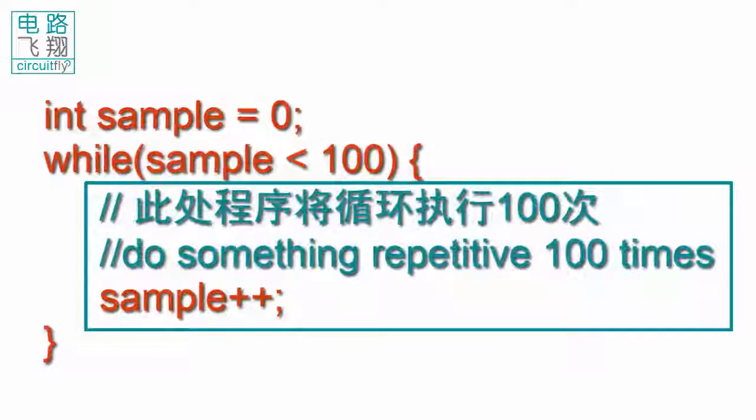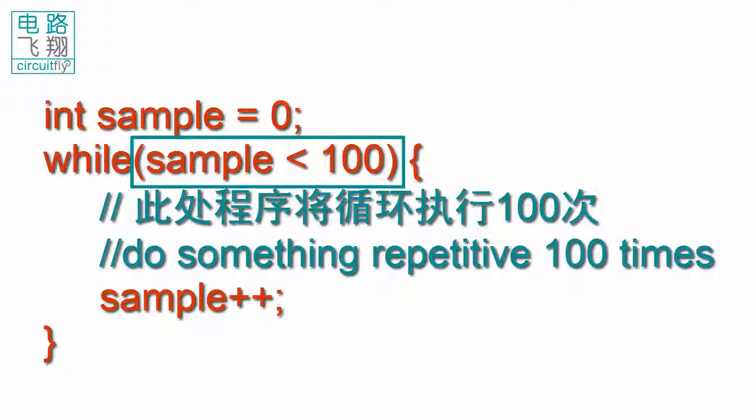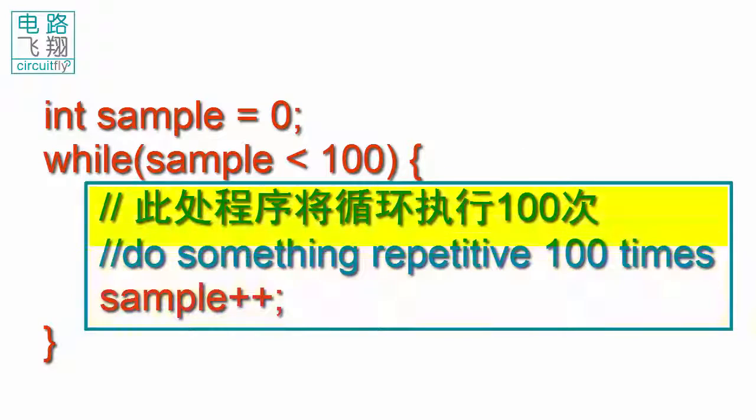This is a while loop example. A variable sample is assigned by 0. In the while loop, if sample is less than 100, the lines in the curly brackets will loop continuously.